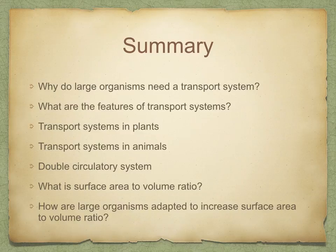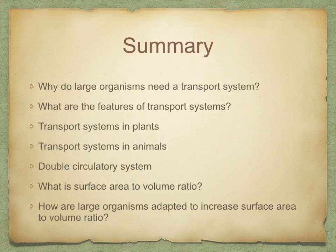In summary, we looked at why large organisms need a transport system, what are the features of transport systems, transport systems in plants and animals, the double circulatory system, surface area to volume ratio, and how large organisms are adapted to increase the surface area to volume ratio. And that concludes our lesson.